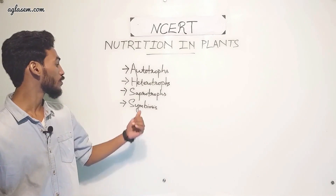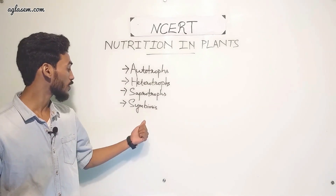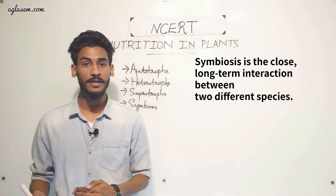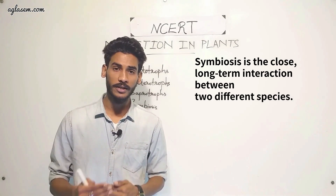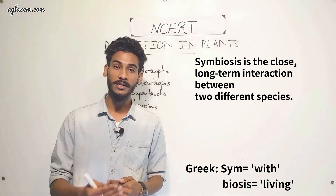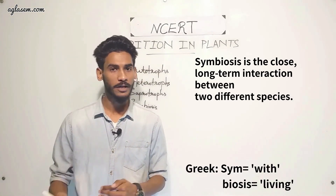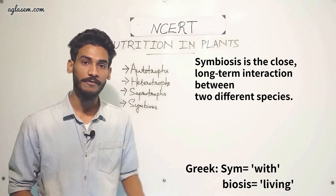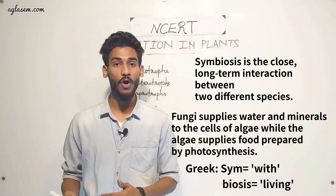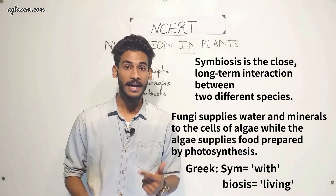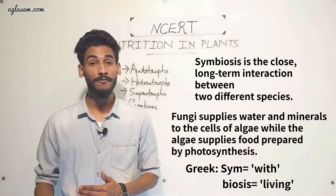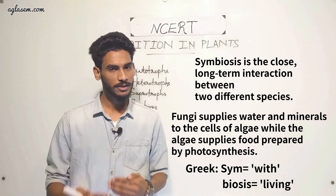Symbiosis is the close relationship between two organisms or species where they depend on each other for their food habit and living, like the lichen. Lichen is the combination of algae and fungi where they depend on each other for food, food habit, and structure.